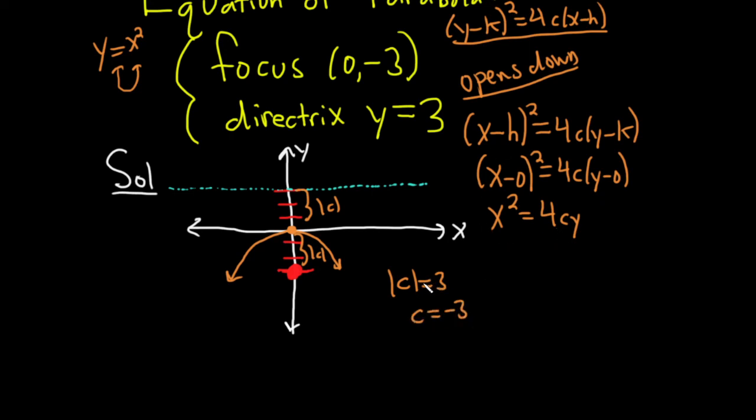Because this equation has two solutions, three and negative three. We want the negative one because it opens down. So X squared equals four times negative three times Y. So X squared equals negative 12Y. And that would be the equation of the parabola.